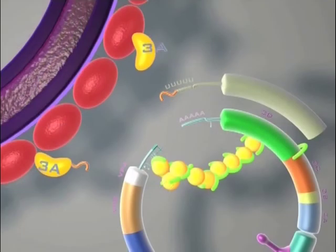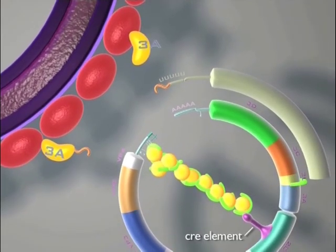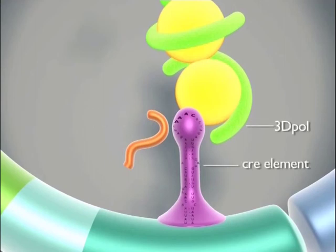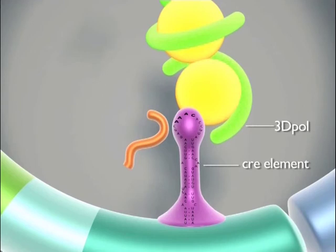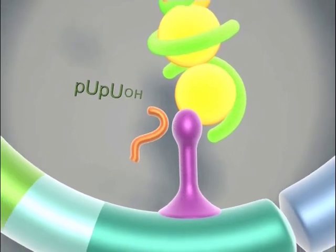Then, another ribonuclear protein complex containing more 3CD Pro is formed at the CRE RNA hairpin, interacting with the 5-prime end. With further protein cleavages, more VPGs have become available. A conserved structure on the CRE element will serve as a template for the polymerase 3D pole to add U's on the VPG. This is called uridylylation of VPG and it may happen recurrently to produce a reservoir of uridylylated VPGs.